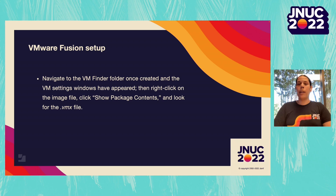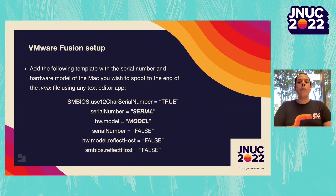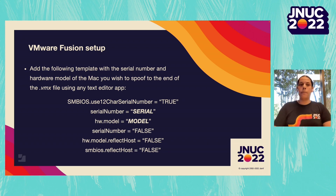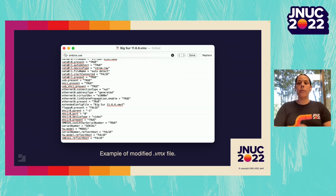We're going to navigate through Finder to find the .vmx file so we can edit it with any text editor application you prefer. Keep in mind that the path may change depending on where you saved the file. Once you find the .vmx file, open it with any text editor app. The template is a little bit longer, but we still only need two components: the serial number and the hardware model — both found from System Information. Add the template to the very end of the file, add the two values, and then save the file. Everything else in the template will stay the same.